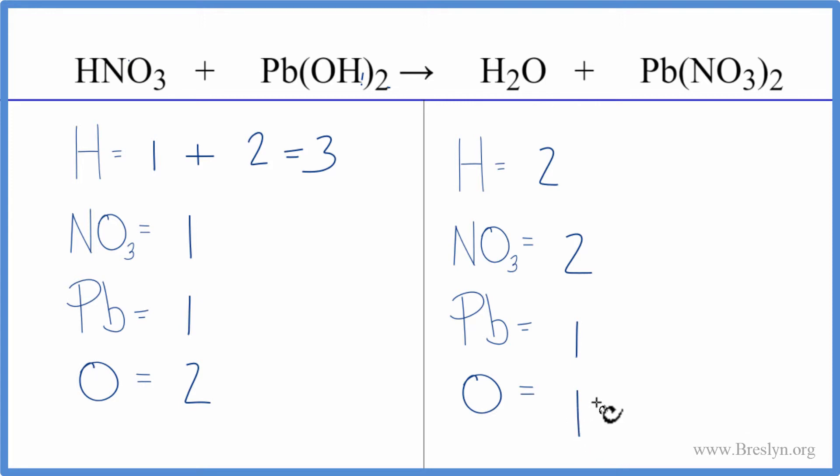Let's balance the equation. We'll leave these hydrogens until last because we have an odd number here. Let's start with the nitrates. We could just put a two in front of the HNO3.